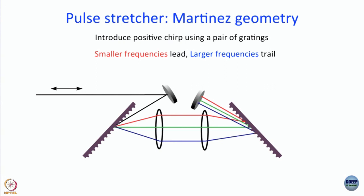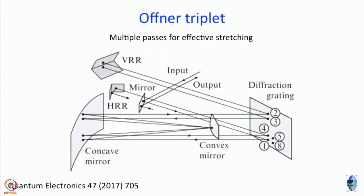Next, let us move on to something that is a little more complicated, and this complicated arrangement is called an Offner triplet. This is one slide that I should have animated, but it would have been too much of work. Let us see if we can understand what is going on here.